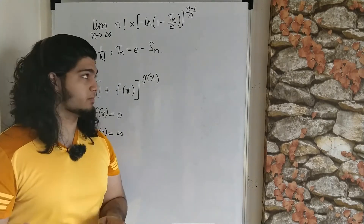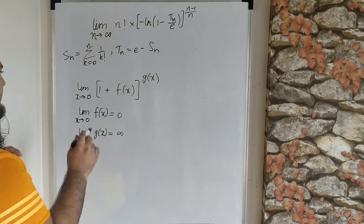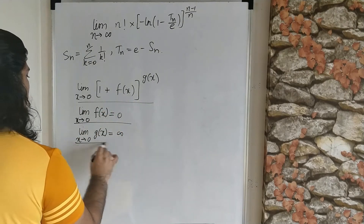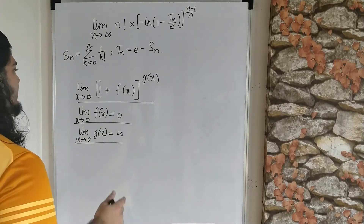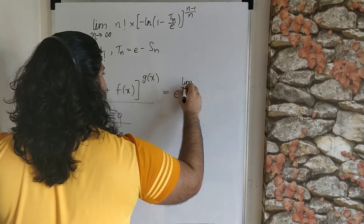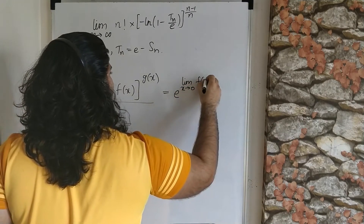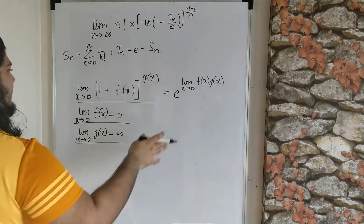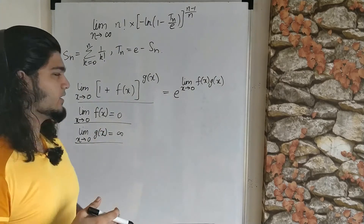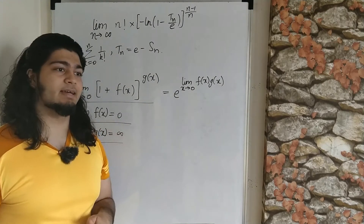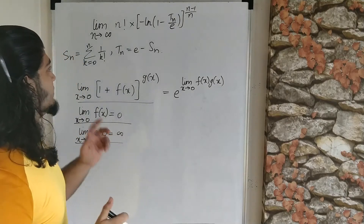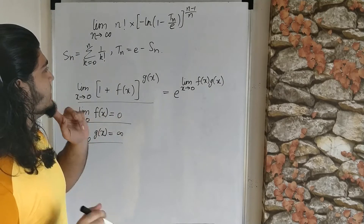Before we proceed, I'd like to remind you of a certain identity. If the limit as x goes to 0 of f(x) is 0, and the limit of g(x) is infinity, then the limit of (1 + f(x))^g(x) equals e to the power of the limit of f(x)·g(x). This identity is derived from the definition of e — I'll link some videos in the description — and we'll take it as a given.